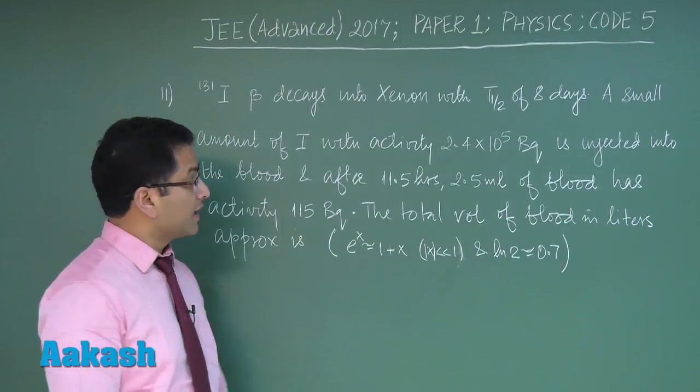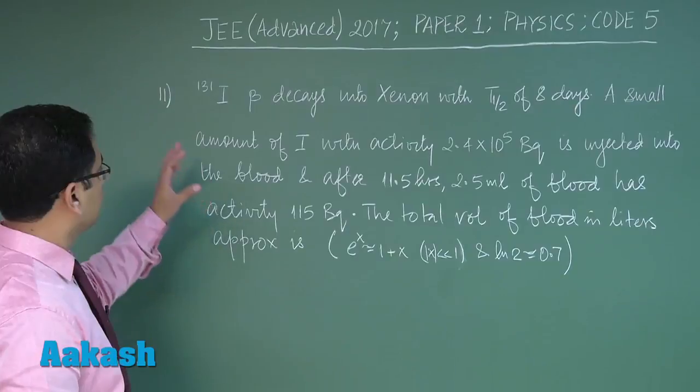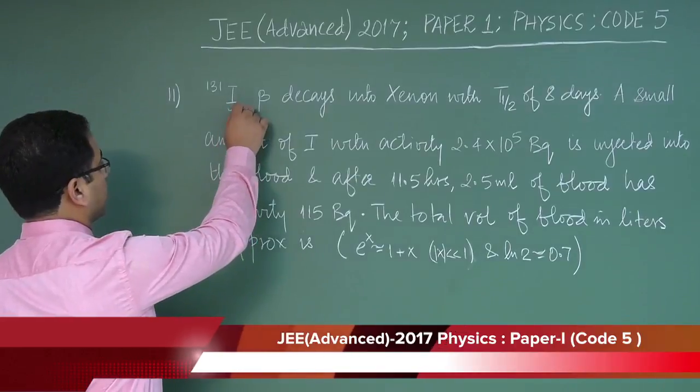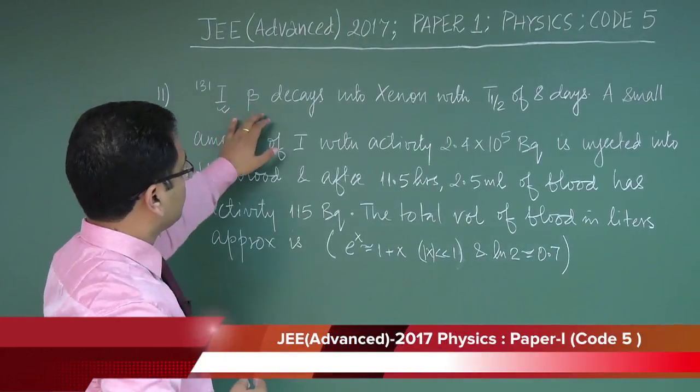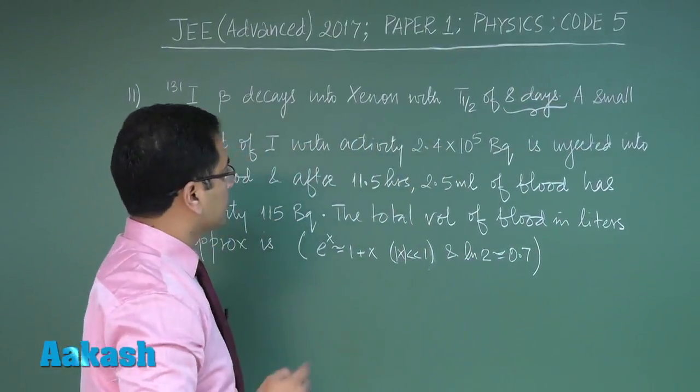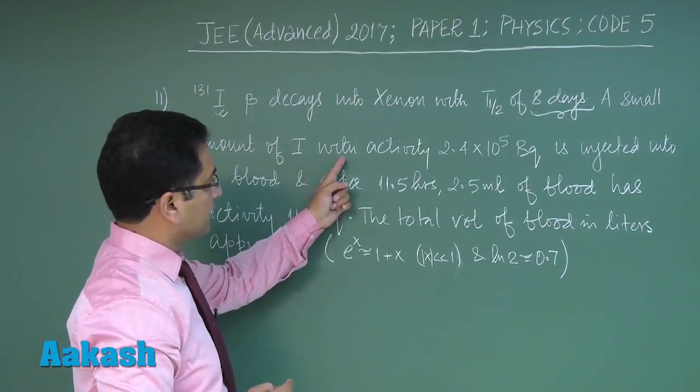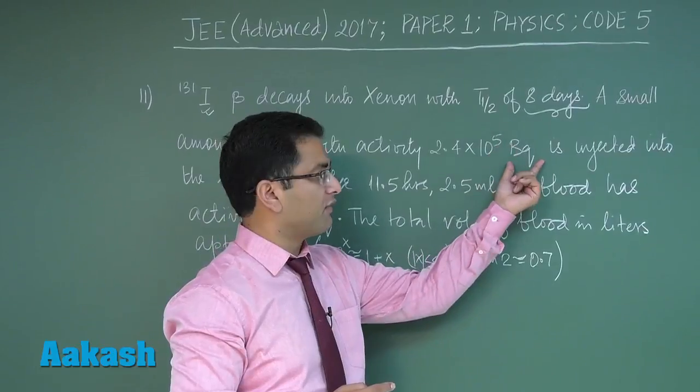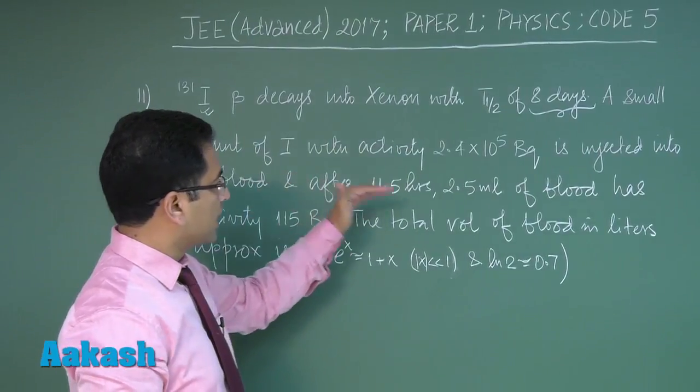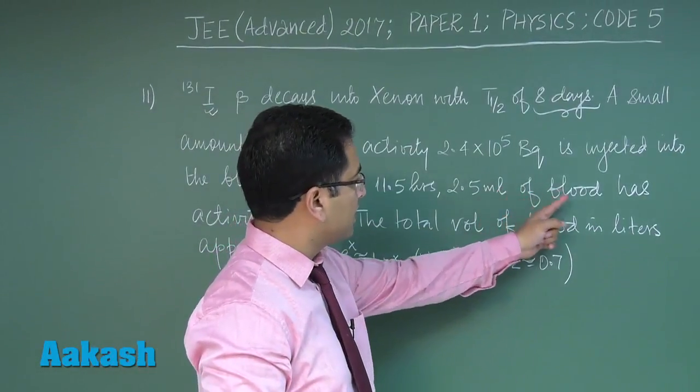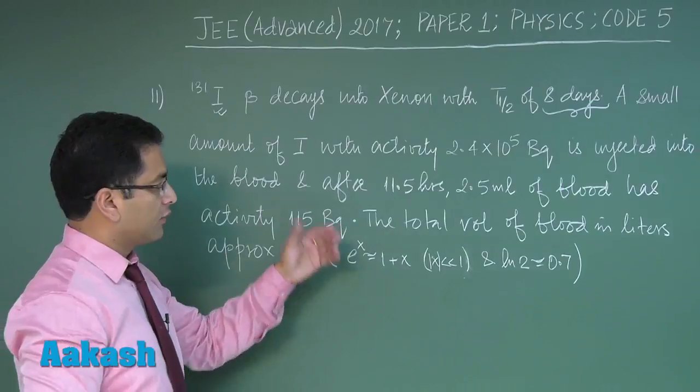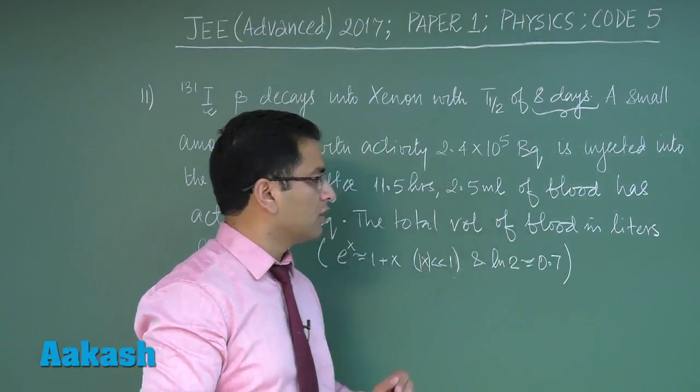Question number 11 is from modern physics, more precisely radioactivity. Let's see: Iodine-131, this particular isotope, beta decays into xenon with half-life of 8 days. A small amount of iodine with activity 2.4 × 10^5 becquerel is injected into the blood. After 11.5 hours, 2.5 milliliter of blood has activity 115 becquerel.